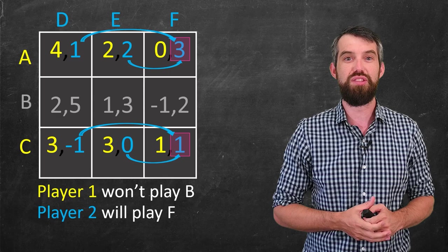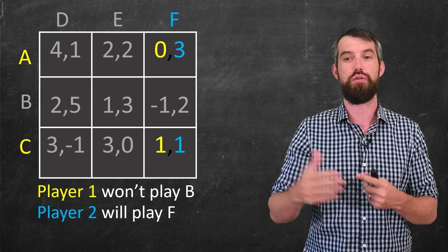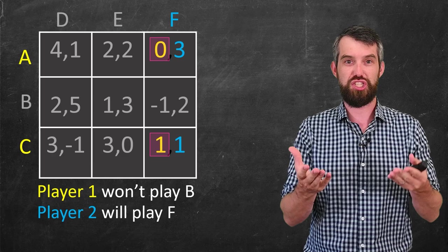So we can simplify again. They're not going to play D. They're not going to play E. We can just gray out all of that. That leaves just two squares as to the possible outcome for this game. And now let's go back to player one. From player one's perspective,